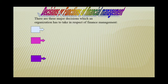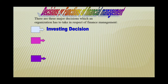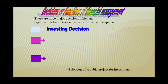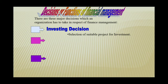Three major decisions which an organization has to take in respect of finance — the first is the investment decision. The key line of this decision is: the selection of suitable projects for investment. This is the key line of this decision or function.